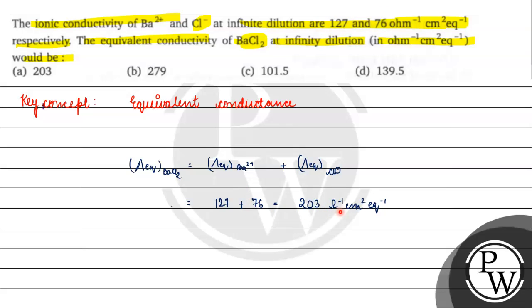If you want 203 ohm inverse centimeter square equivalent inverse, the correct answer for this question will be option A. Thank you and all the best.